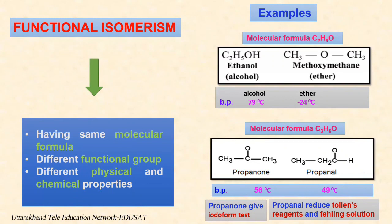Propanal and propanone are functional group isomers with the molecular formula C3H6O. Both have dipole-dipole interaction between molecules. Propanal has a slightly higher boiling point as a result of higher dipole moment than propanone. Propanal is an aldehyde and it reduces Tollens reagent and Fehling's solution, but propanone, being a methyl ketone, does not reduce. And propanone, being a methyl ketone, responds to the iodoform test, but propanal does not. Next is metamerism.